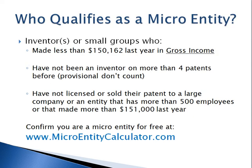So who qualifies as a micro entity? First, all of the inventors need to make less than $150,162 per year in gross income for the last calendar year. That means all money received — not just your salary, but gifts, rental income, everything — must total less than $150,162. Next, you cannot have been the inventor on more than four patents throughout your life, and provisional patents don't count. Finally, your patent can't be sold or licensed to a larger company that may not qualify as a micro entity.